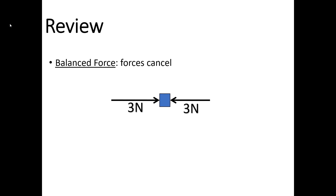Sometimes we have forces that cancel. In this example, these are opposing forces, so to find net force we subtract. 3 minus 3 gives us 0. When net force is 0, we call this a balanced force, and there's not going to be any motion.